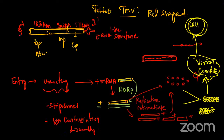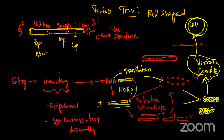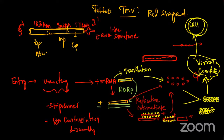Student question: where does the coat protein come from? The mRNA strand has the ability to go for translation. Transcription and translation happen simultaneously. Translation makes coat protein, which goes and coats whatever new replicative strands are produced. The genome is coated and becomes a complete virus particle.